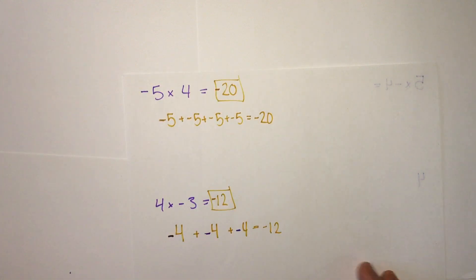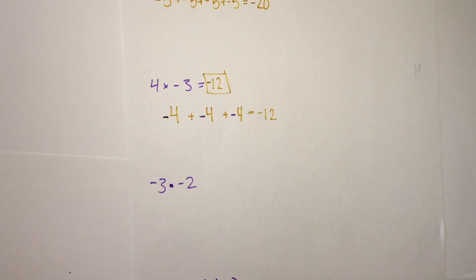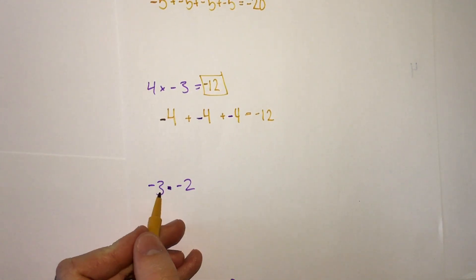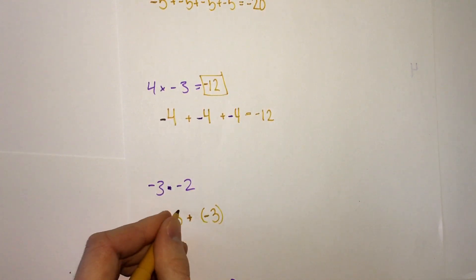But what happens when both of our numbers are negative, such as this one, negative 3 times negative 2? This could mean that we are doing negative 3 added twice, but then we're adding it negative 2 times. So we're doing negative negative 3 plus negative negative 3.